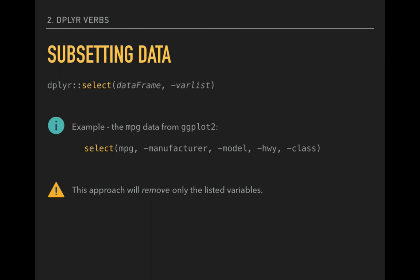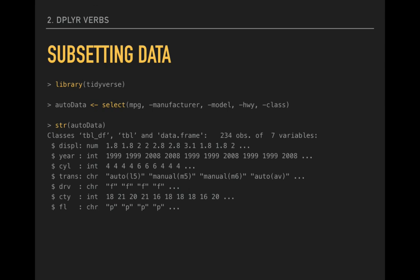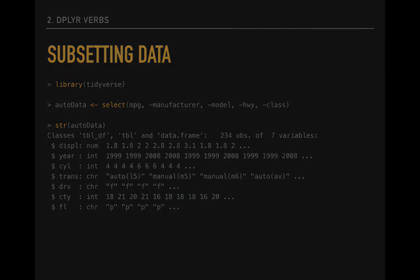Alternatively, we could select the variables that we want to remove by including a negation symbol, the dash, in front of each variable. This removes only the listed variables. This twist on the SELECT function leaves us with all of our observations and the seven variables that we did not specify in the function.